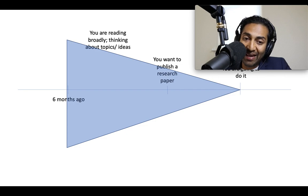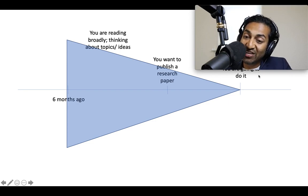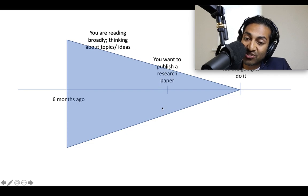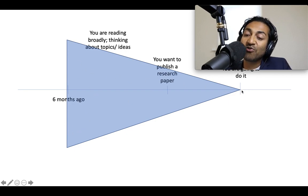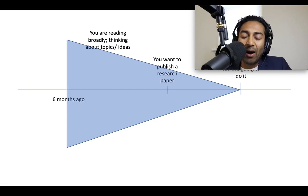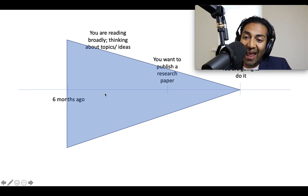I show this diagram: over on the left is many, many things going on — you reading broadly, thinking about topics and ideas. You want to publish a research paper — that's this moment in time. And then there's actually doing it. The number of ideas you need to be thinking about, the number you start to screen, and the idea you actually take forward — this should be much broader than what you actually execute. You should be thinking about a hundred ideas for every one idea you set out to do. This is the part about research that people don't really get: the work on the back end is not rewarded, it's not compensated for, but it's key if you really want to do impactful, meaningful science.